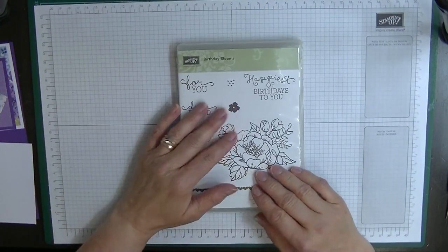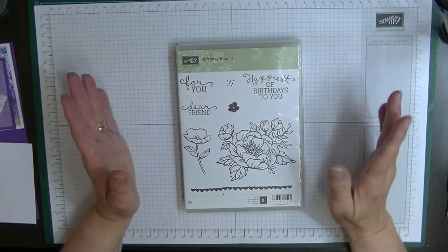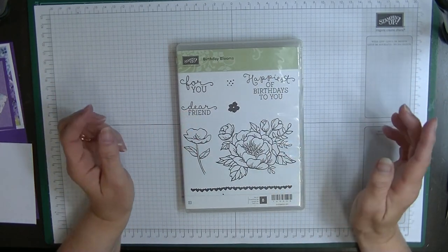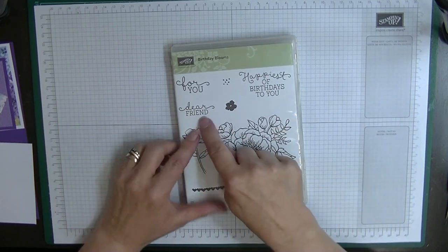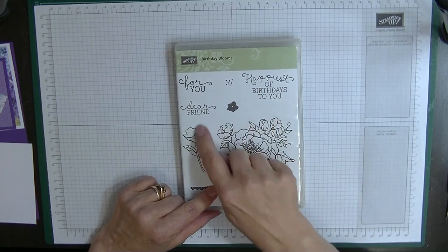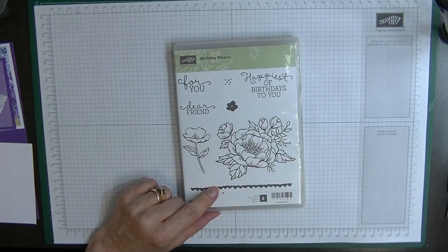I'm going to be using this old set called Birthday Blooms because I wanted the words. I wanted to send a card to my friend in the UK, so I've put dear friend and I'm going to put happiest of birthdays to you and use this flower here.